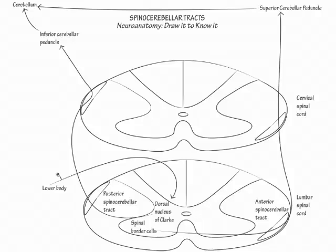Generally, the inferior and middle cerebellar peduncles are the inflow pathways to the cerebellum, and the superior cerebellar peduncle is the outflow pathway for fibers from the cerebellum. The anterior spinocerebellar pathway is the major exception.